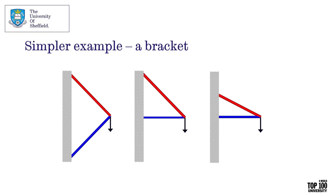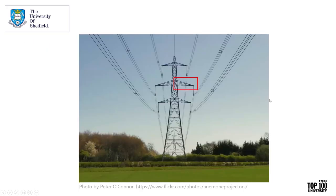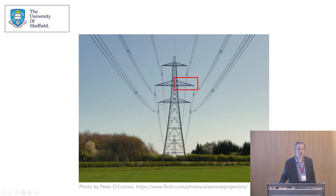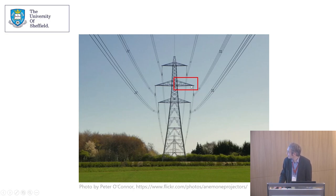This applies to a single dominant load case. It's really useful to know the best arrangement of members. If we take a point load with members arranged orthogonally versus making the angle between tension and compression members increasingly acute, the volume of material consumed more than doubles. This may seem an extreme case, but looking at an electricity pylon, we often are using these acute angles — and they aren't even the most extreme examples.